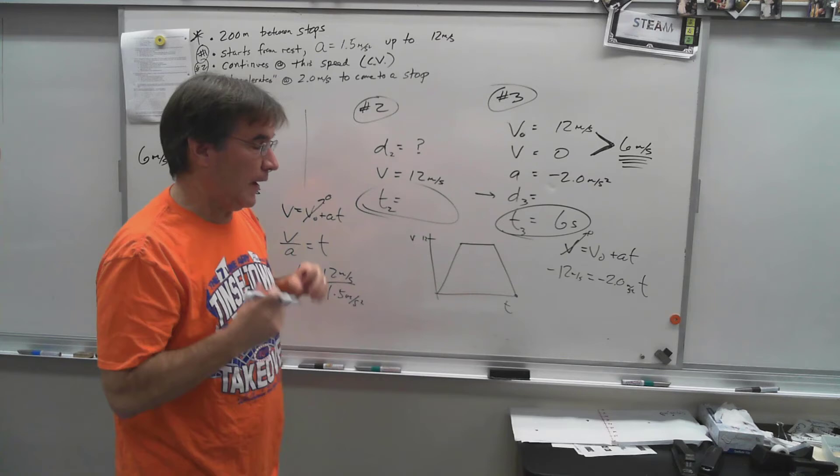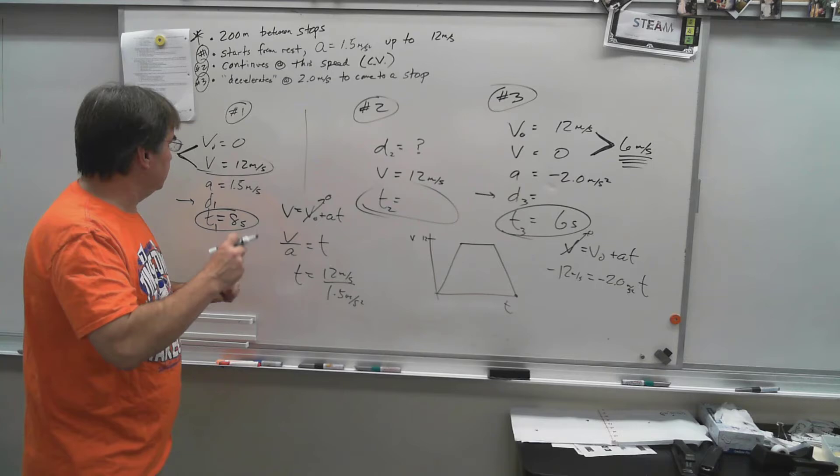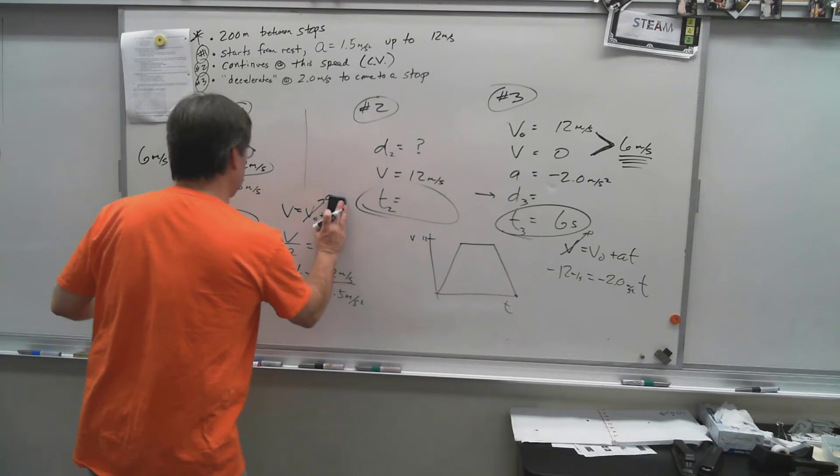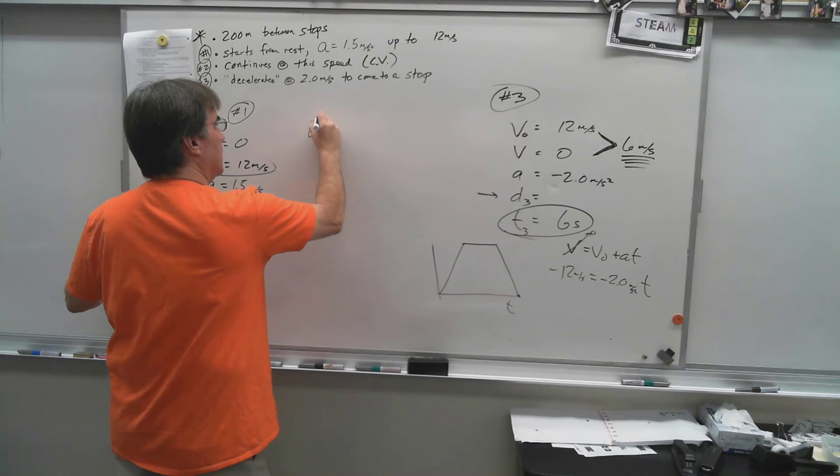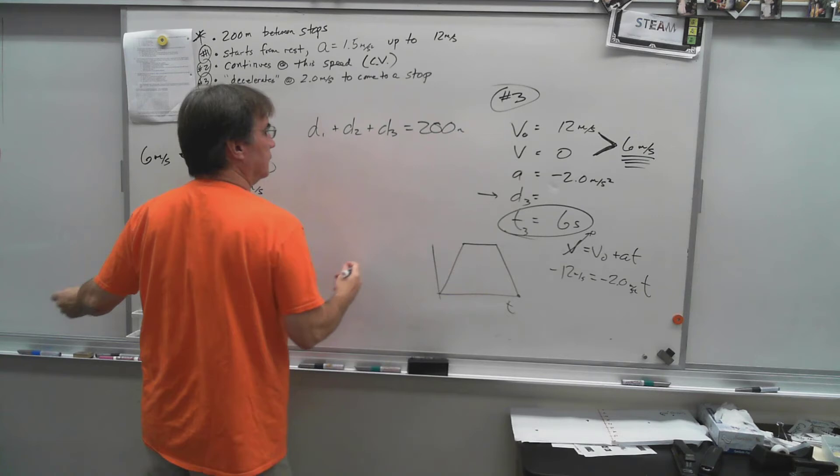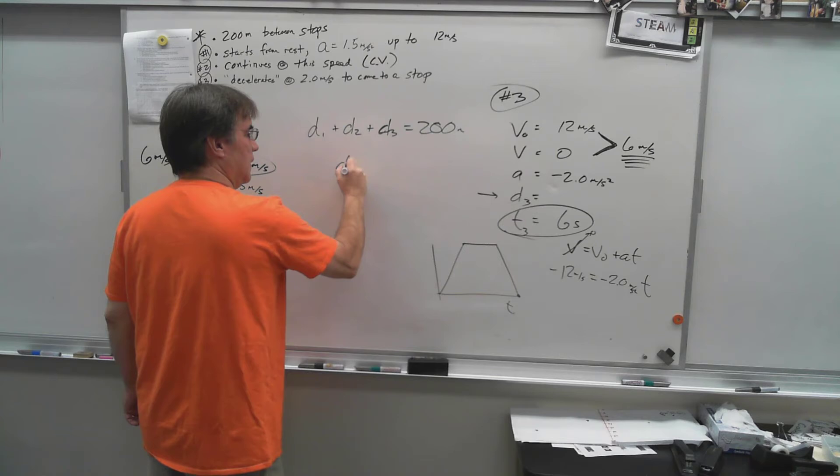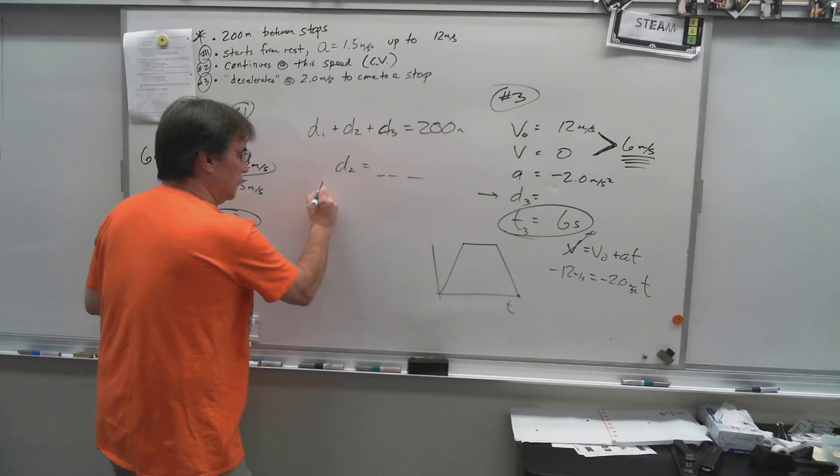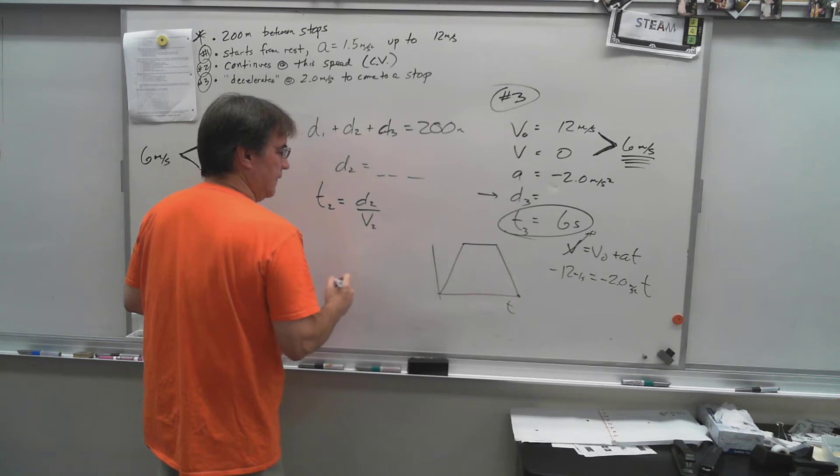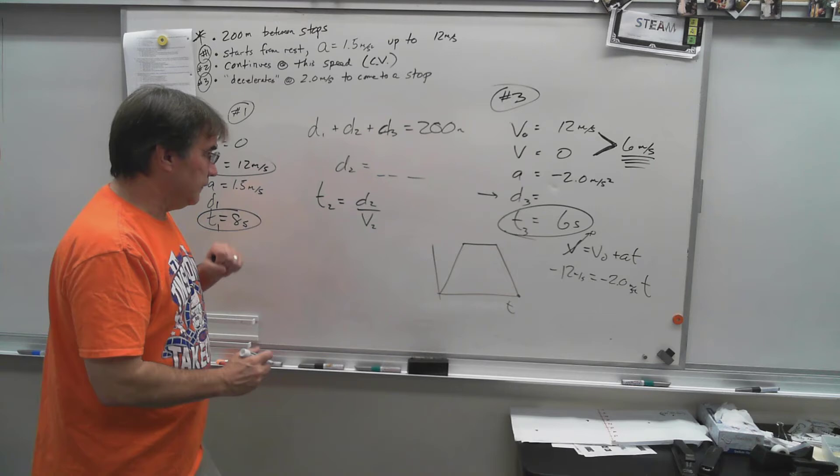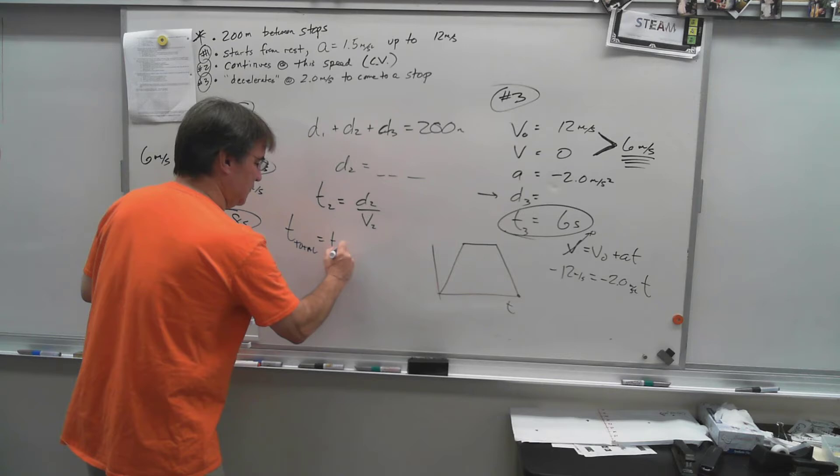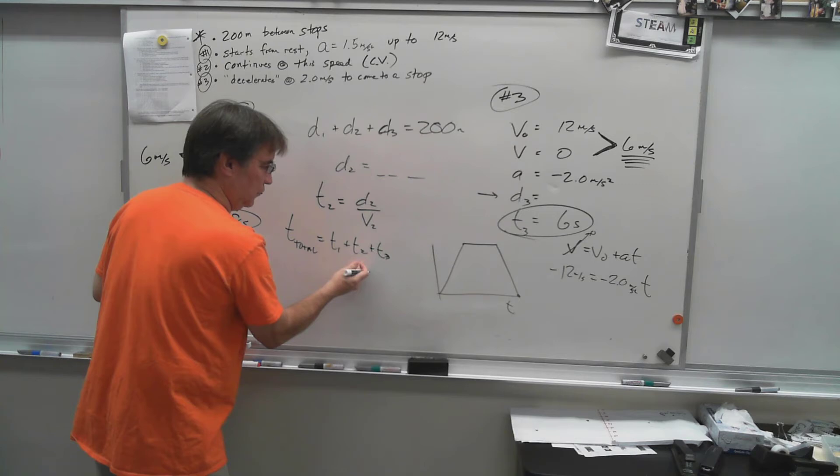You can pick any equation. You could do divot here. If you do divot, remember you've got to do the average velocity. Same thing here, same thing, you've got to use the average velocity, you've got to average those two numbers, or you could use another equation. Any of those equations that have d in it will get you there. I'll leave that part to you. Once you have d1, d3, and the 200, you can go get d2 because those three are adding up to 200 meters.